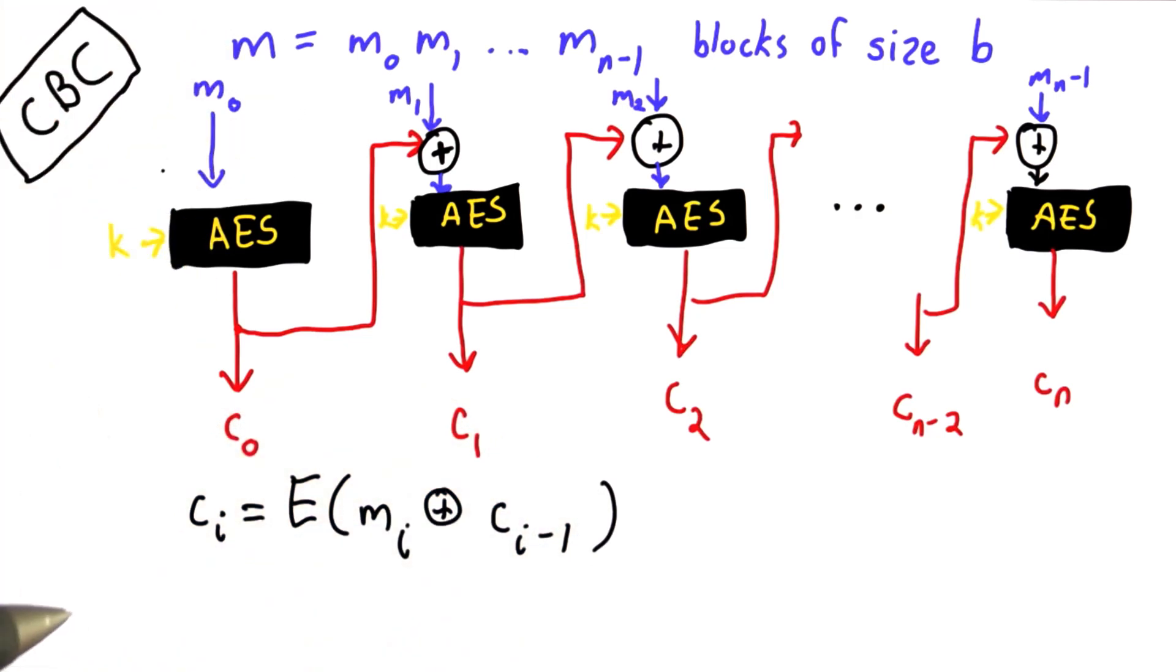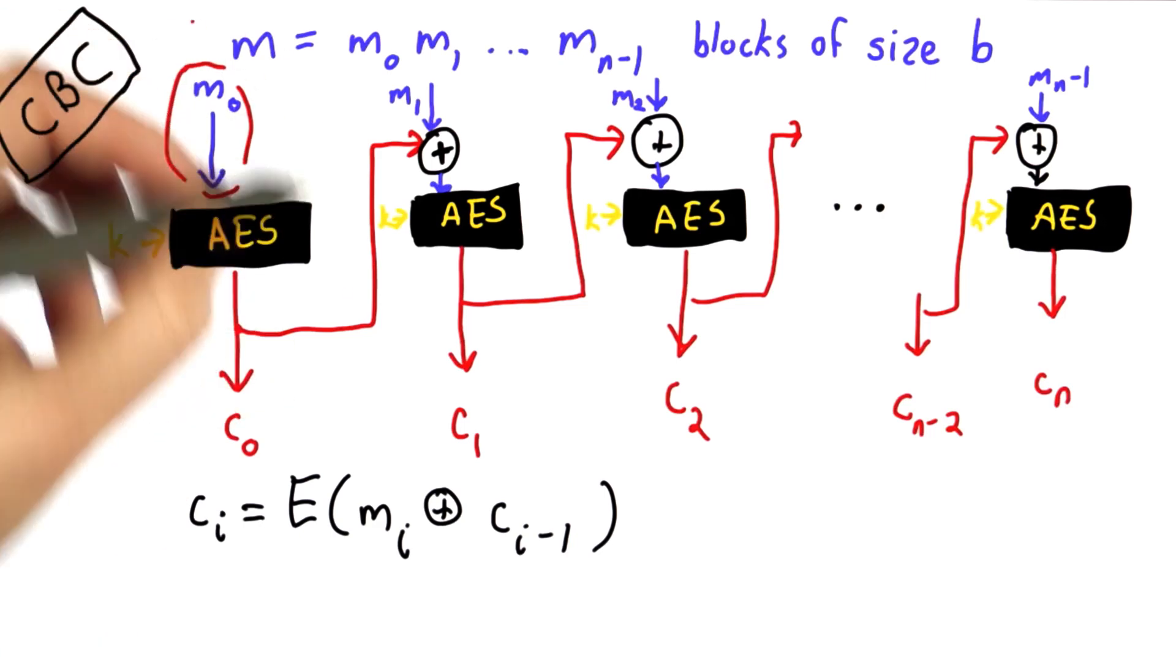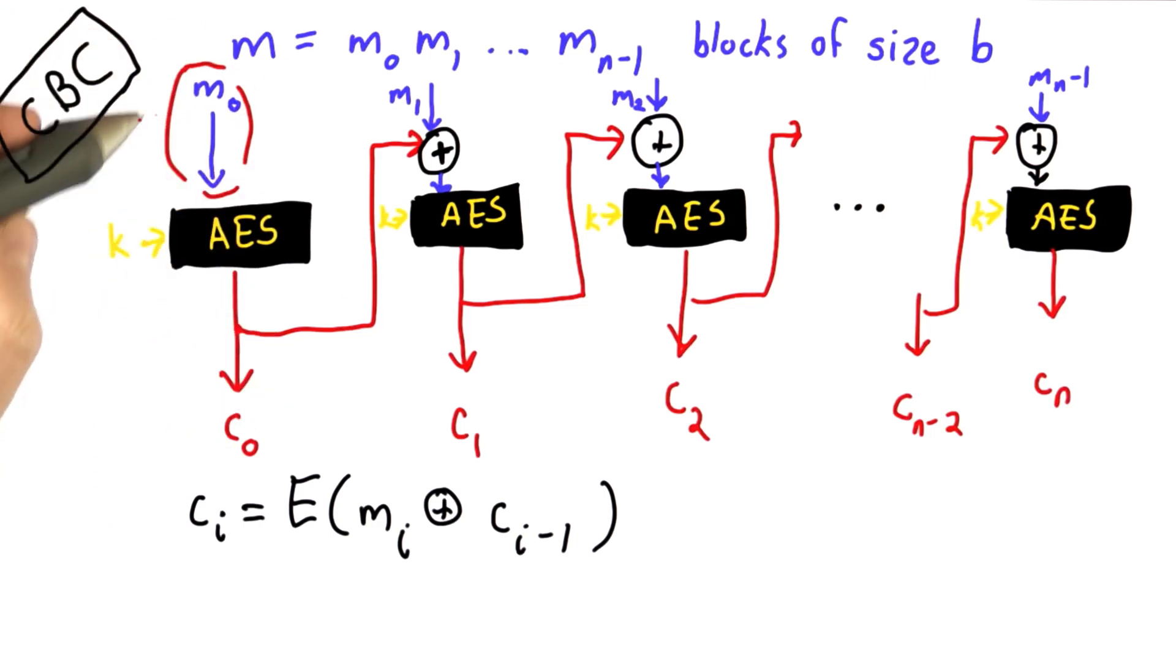We have a little bit of an issue with the first one. The first one, well, there's no 0th block. If we just did what was shown here, we'd still have a problem that we would see repetition every time the first block in a file is the same as the first block in another file, encrypted with the same key. We'd get the same c0 out. So we don't want that.